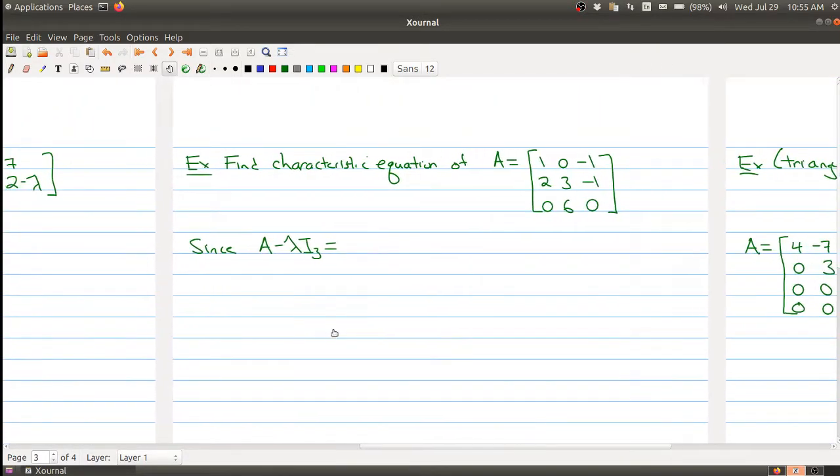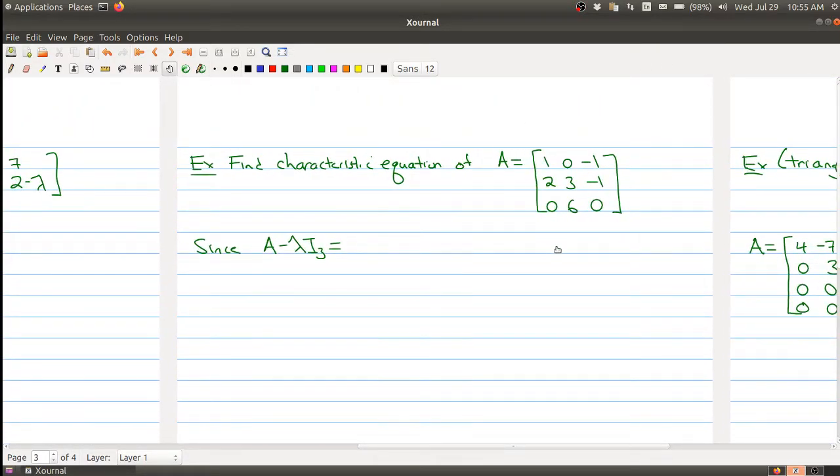So here's my problem. I want to find the characteristic equation of this three by three matrix. So what I first need to do is take the matrix A and I need to subtract lambda times the identity matrix of size 3 from that matrix to make a new matrix.